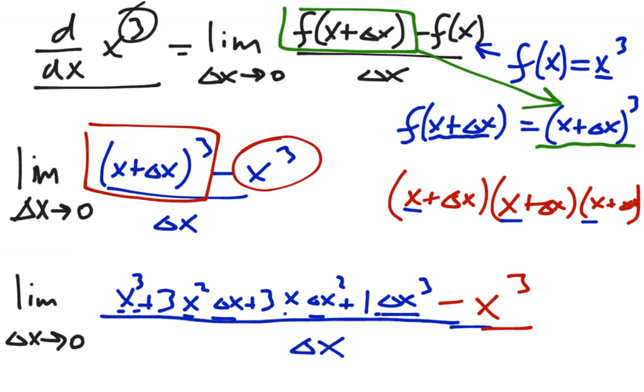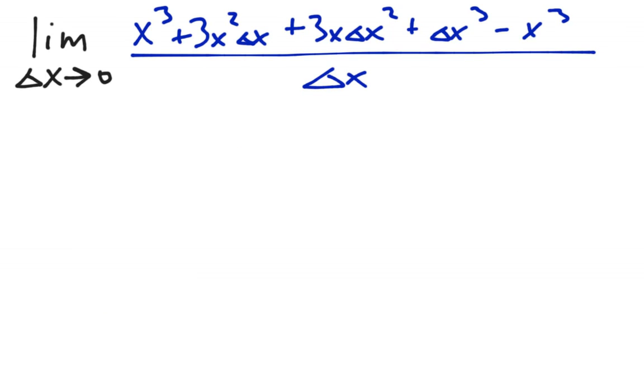And then this is all divided by delta x. Don't worry. It gets better. Watch. That's what we have right now. And let's simplify it. Because watch. Ha. X cubed and minus x cubed. That's the key to this, really, is that those two things go away.